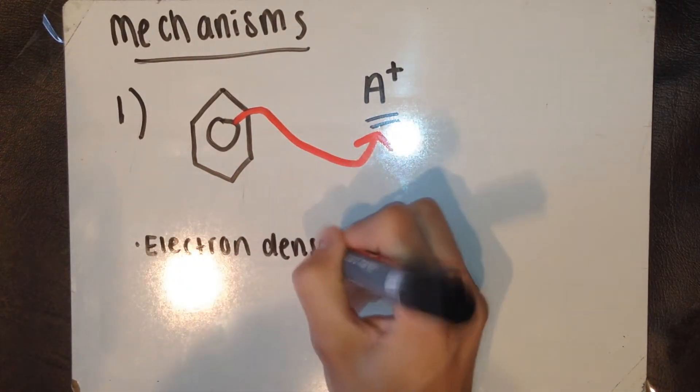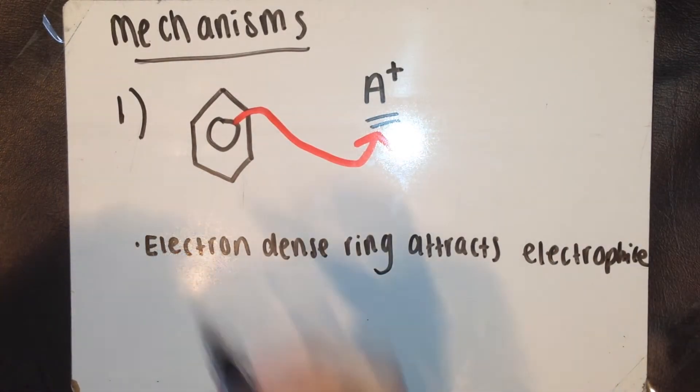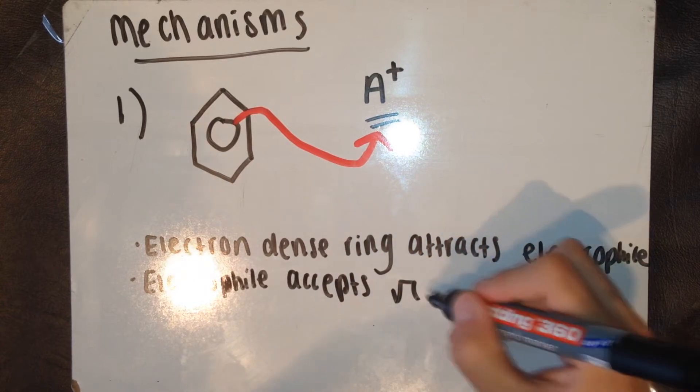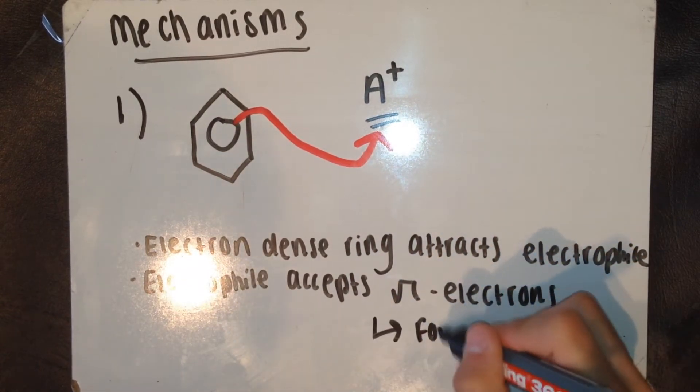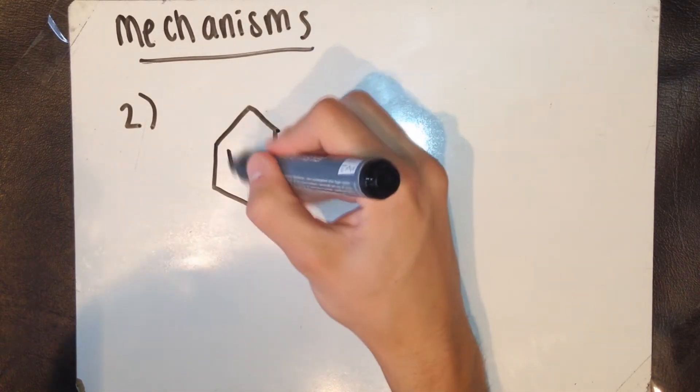So what happens here is, the electron-dense ring attracts electrophiles, the A+. As the electrophile is an electron pair acceptor, the electrophile then accepts a pair of pi electrons from the electron-dense ring. This forms a covalent bond.